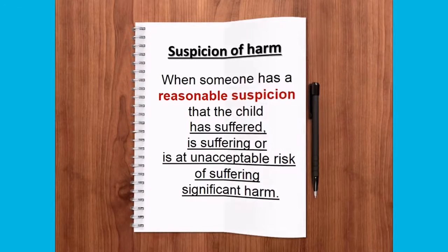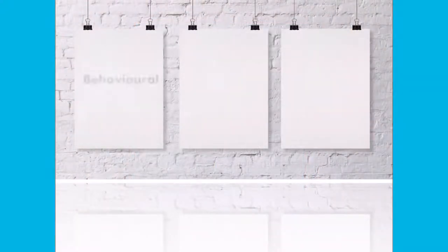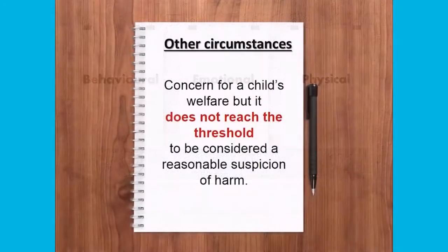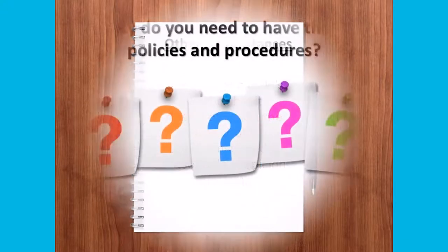This includes circumstances which relate to an unborn child which may be in need of protection after he or she is born. A child who has been or may be experiencing abuse may show behavioral, emotional, or physical signs of stress and abuse. There may also be other circumstances where there is concern for a child's welfare but it does not reach the threshold to be considered a reasonable suspicion of harm. We will take you through how to address all these types of circumstances in the latter part of this video.